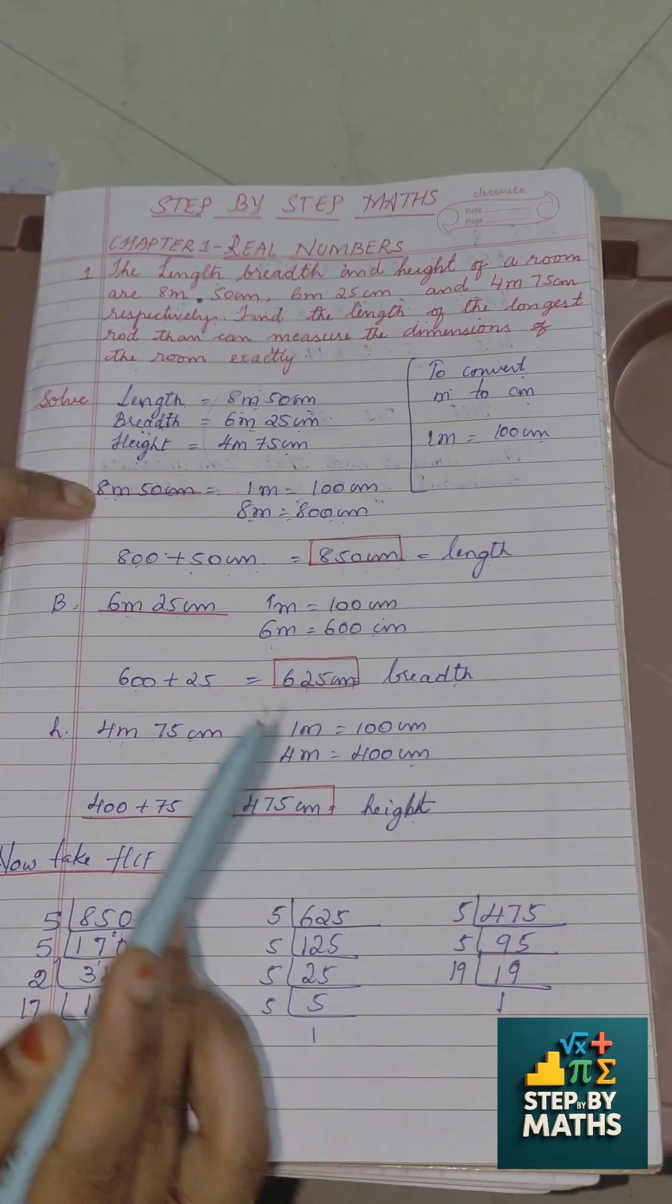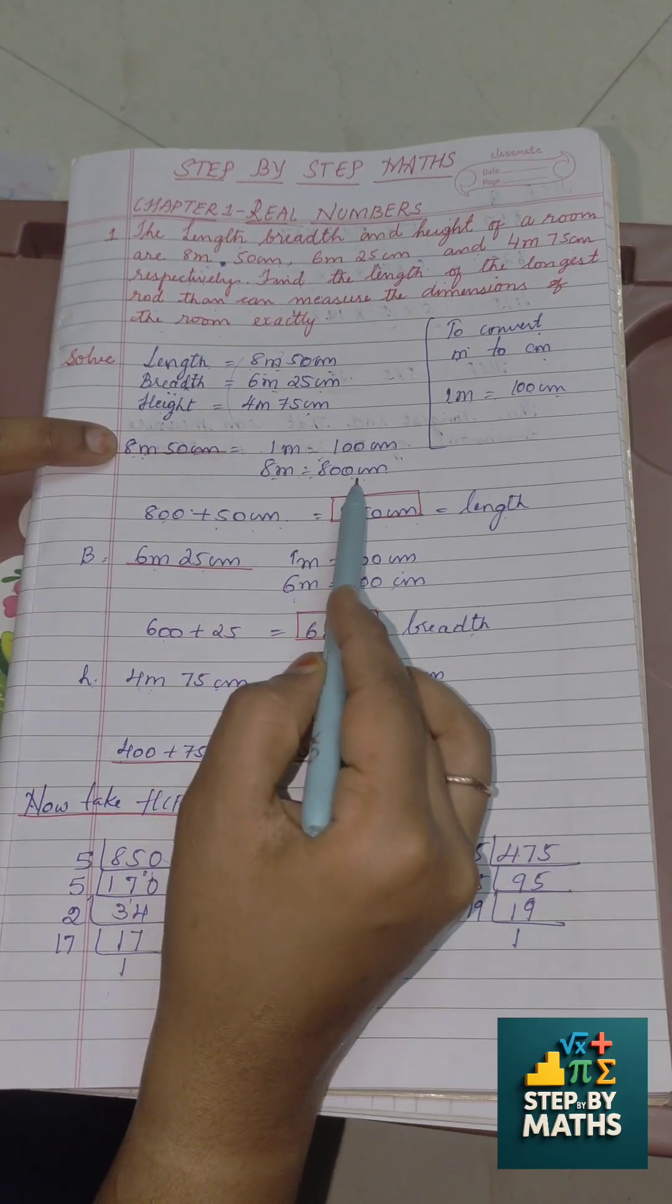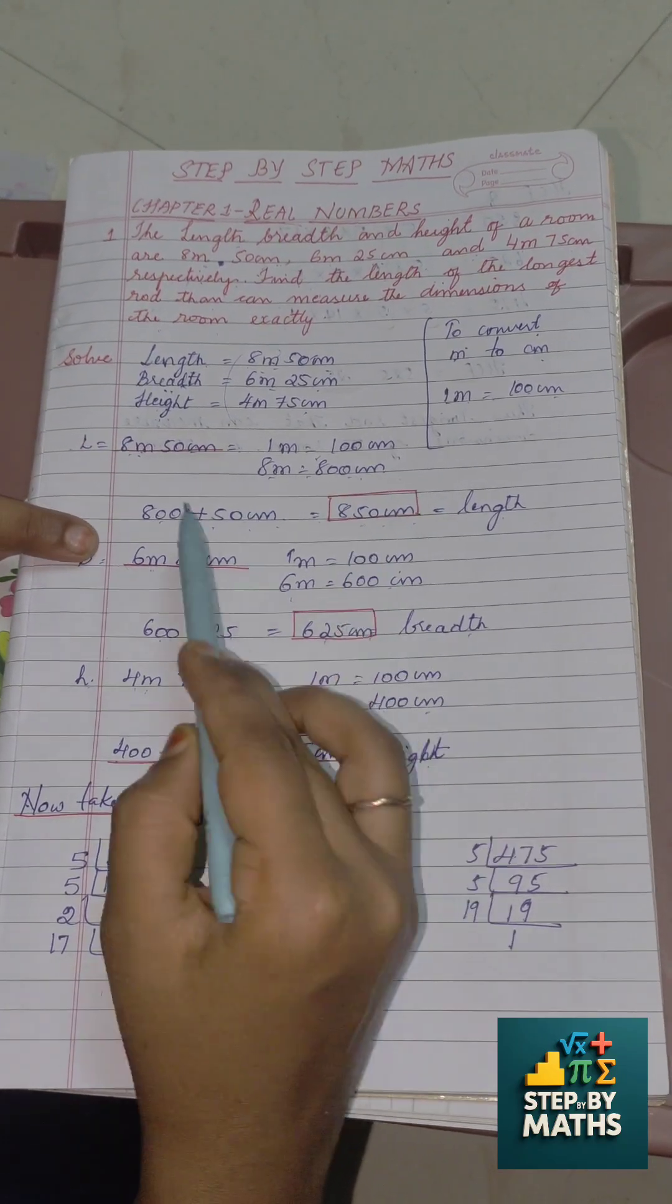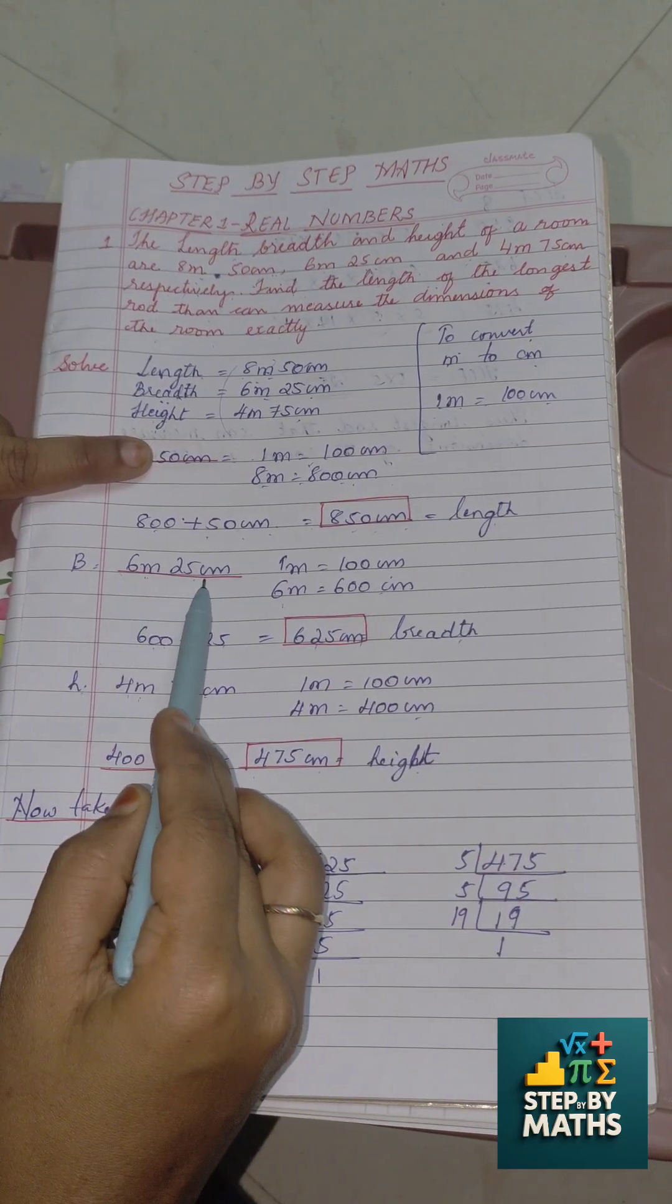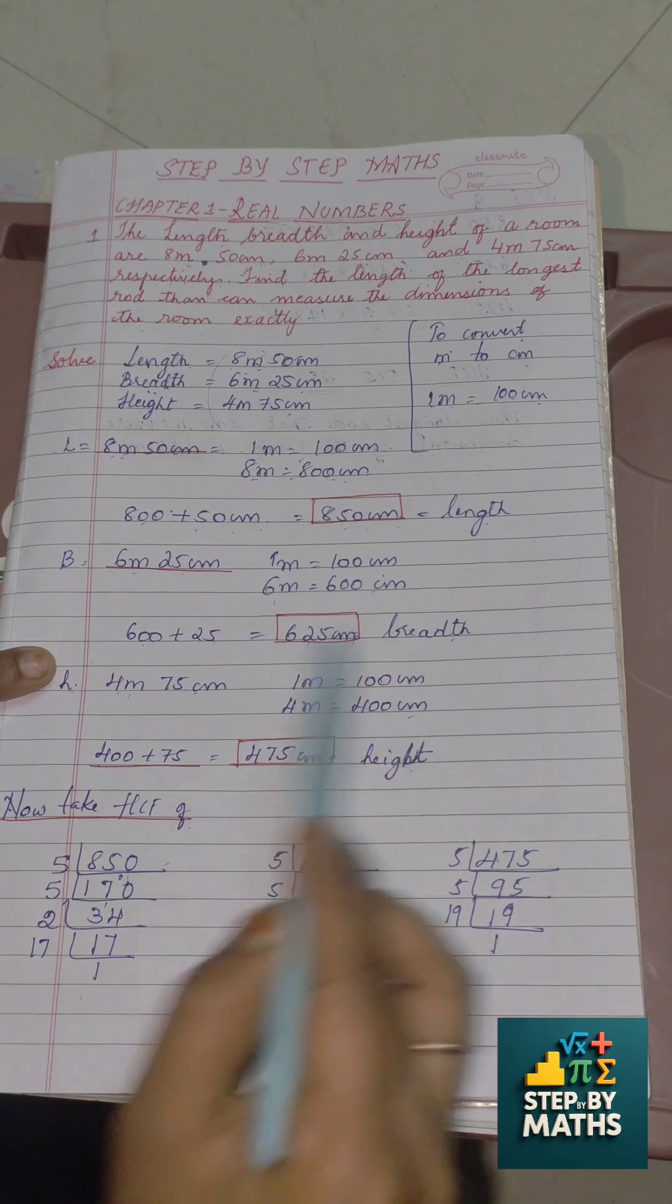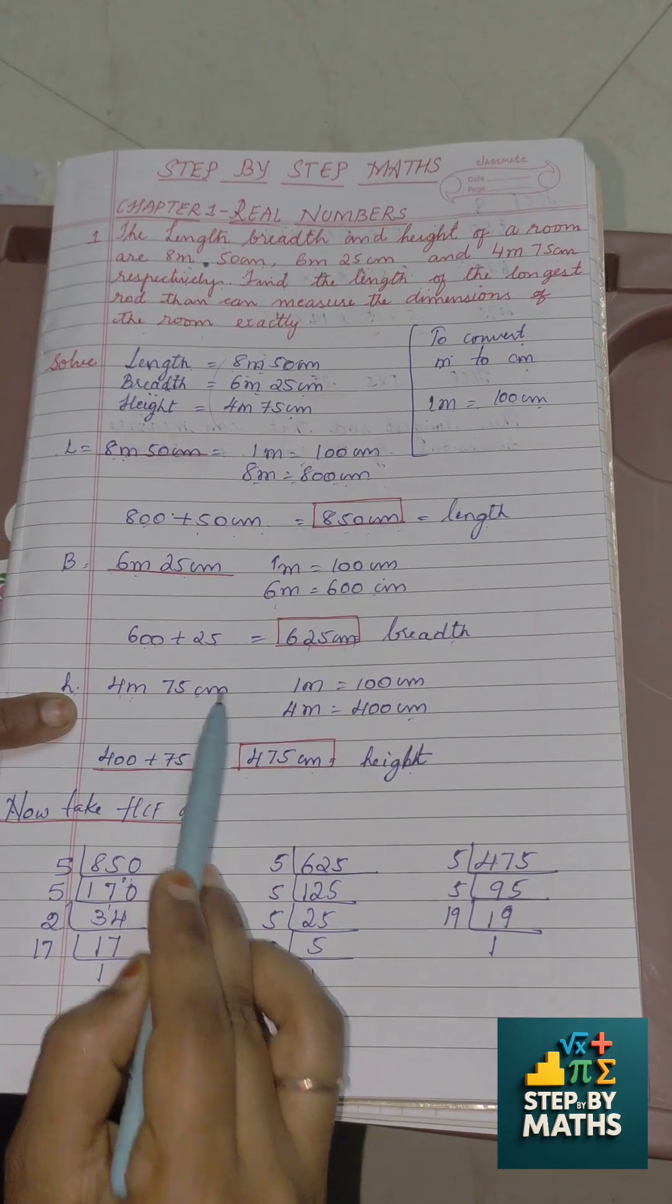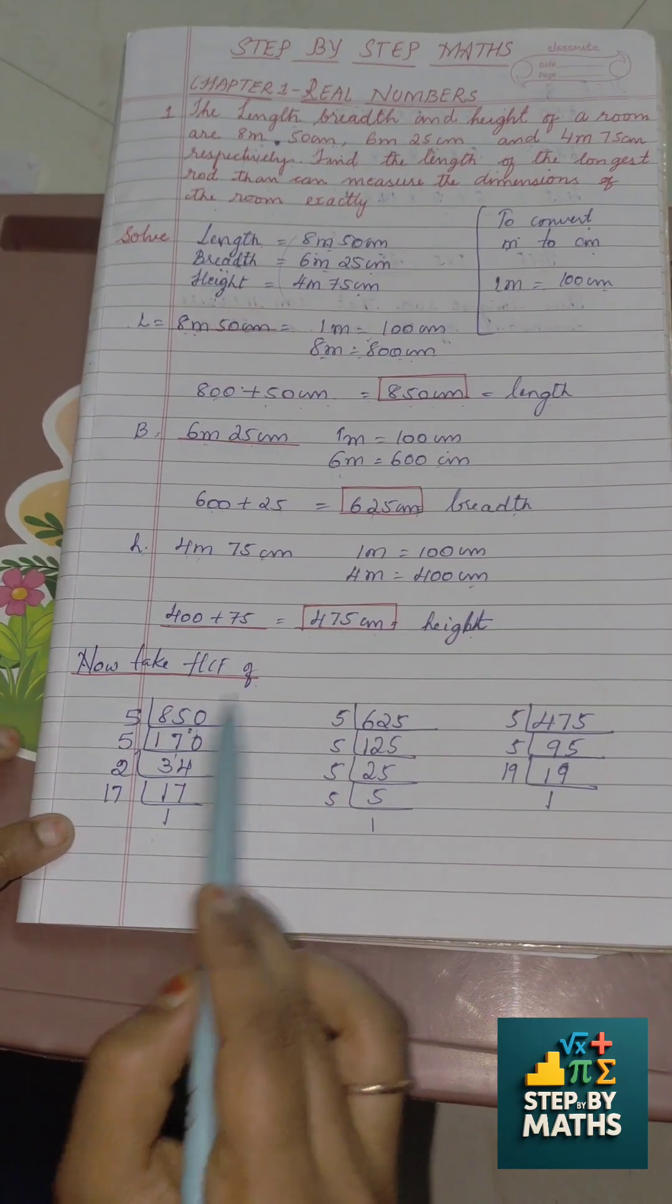Now these values has to be converted into centimeter. 8 meter is equal to 800 centimeter, that is 800 plus 50 equals 850 centimeter, that is the length. 6 meter 25 centimeter can be written as 625 centimeter, that is breadth. 4 meter 75 centimeter can be written as 475 centimeter, that is height.